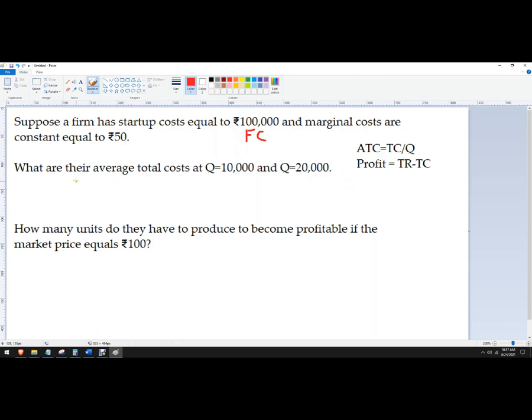So what we want to know is what is the total cost when we produce 10,000 units. It's going to be ₹100,000 plus ₹50 times 10,000.